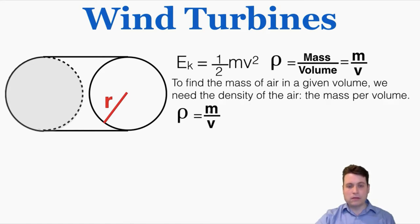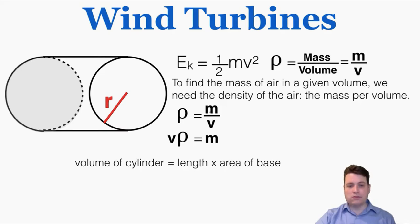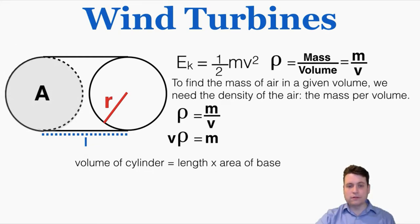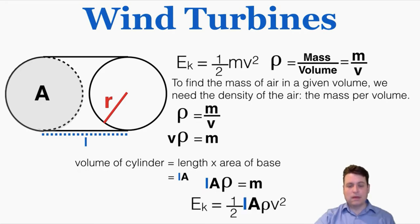Using density, we combine it with the kinetic energy formula. Rearranging gives us: mass = volume × density. The volume of a cylinder equals its length L times the area A of the circular base, so volume = L × A. Therefore mass = L × A × ρ. We can replace mass in the kinetic energy equation with L × A × ρ, giving us: KE = ½ × L × A × ρ × v².